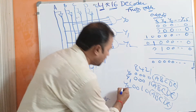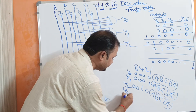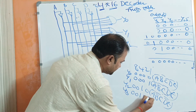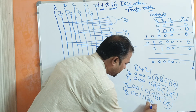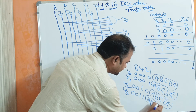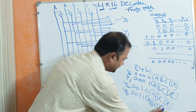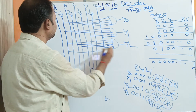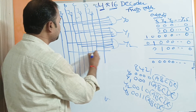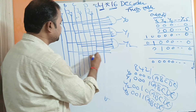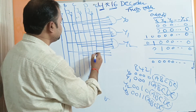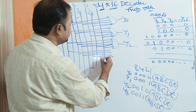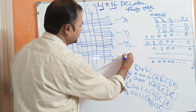Let us write one more output — Y3. 0011 means A-bar, B-bar, C, D, and enable input E. So A-bar is this line, B-bar is this line, C is this line, D is this line, and this line represents the enable input. This AND gate represents Y3.